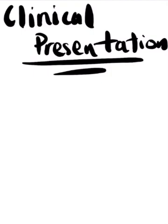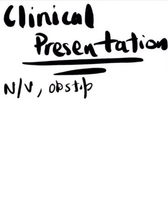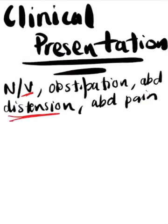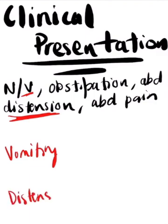Now in terms of clinical presentation, SBOs, large bowel obstructions and ileus will present in a very similar manner. All of them will have nausea, vomiting, obstipation, abdominal distension, abdominal pain. But the two key things that we're going to focus on are vomiting and abdominal distension.